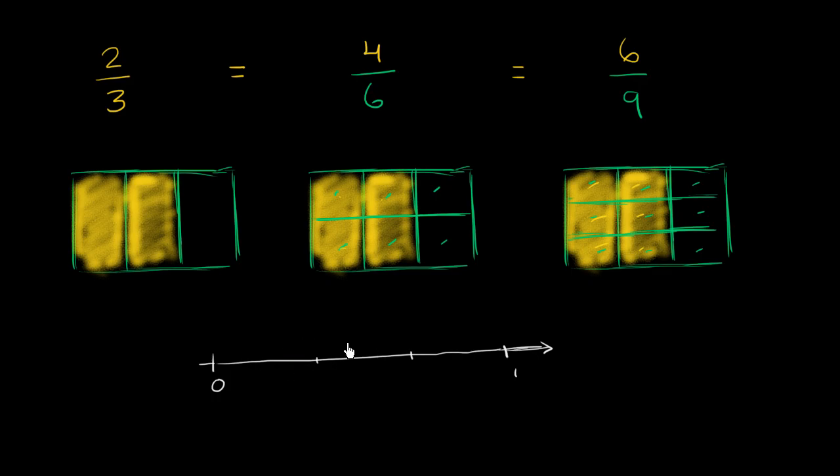So we already know this would represent 1 third, and this is 2 thirds. We've gone two of the equal spaces, of the three, on the way to one. We've divided the section between zero and one into three equal spaces.